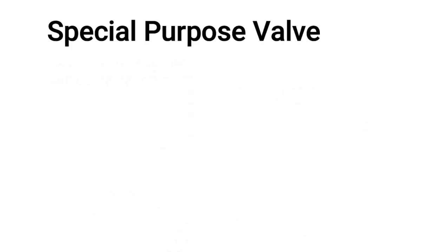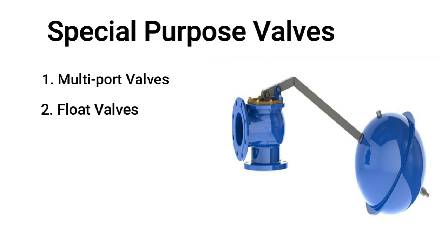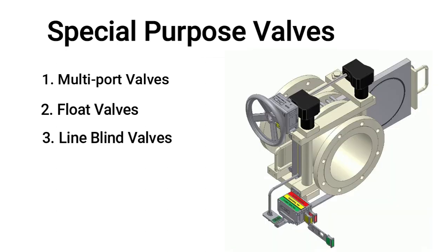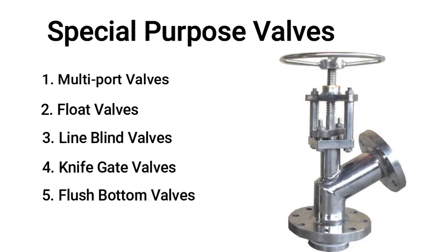The fourth type consists of special purpose valves. First is the multiport valve, typically used for the selection of several flow paths to enable the process to continue in the designed manner. Next is the float valve, used in tanks for avoiding overflow. Another is the blind valve, used for restricting flow. Next is the knife gate valve, which utilizes a blade to cut through clogging of heavy liquid. Fifth is the flush bottom valve, used in piping and vessels to drain out any product or slurry left in the pipe or vessel.